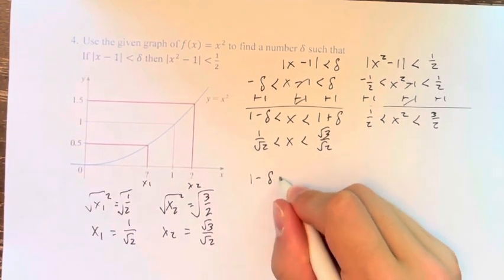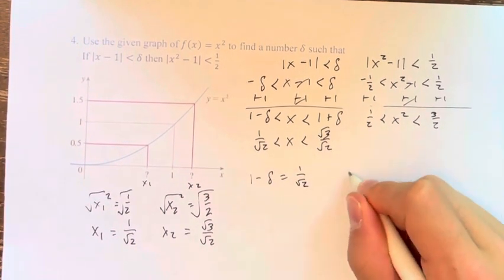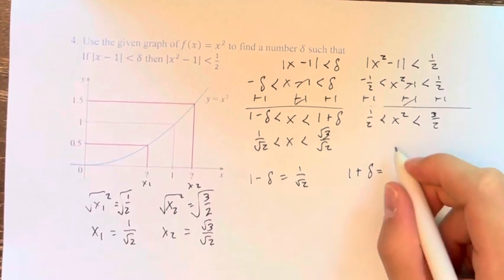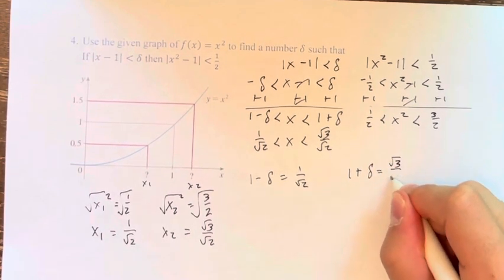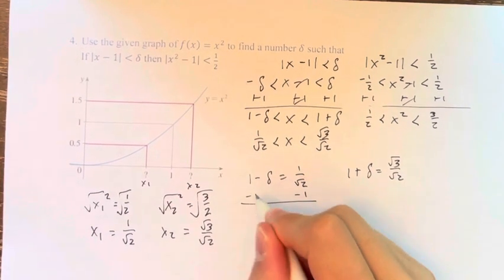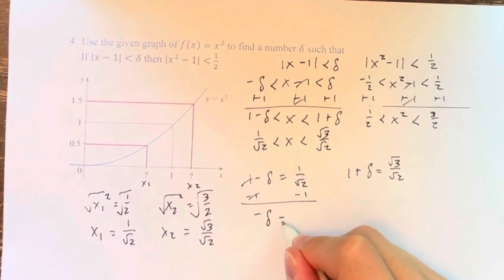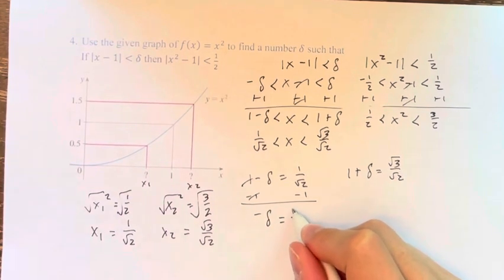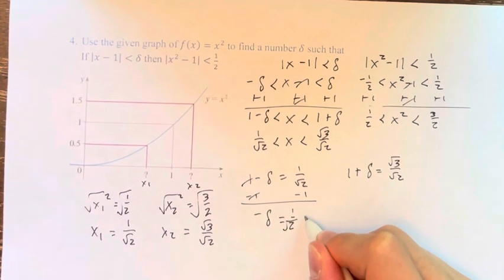So therefore, 1 minus delta equals 1 over root 2, and 1 plus delta equals root 3 over root 2. Solving for delta here, we get negative delta equals negative 1 over root 2 plus 1, or we can say 1 over root 2 minus 1.